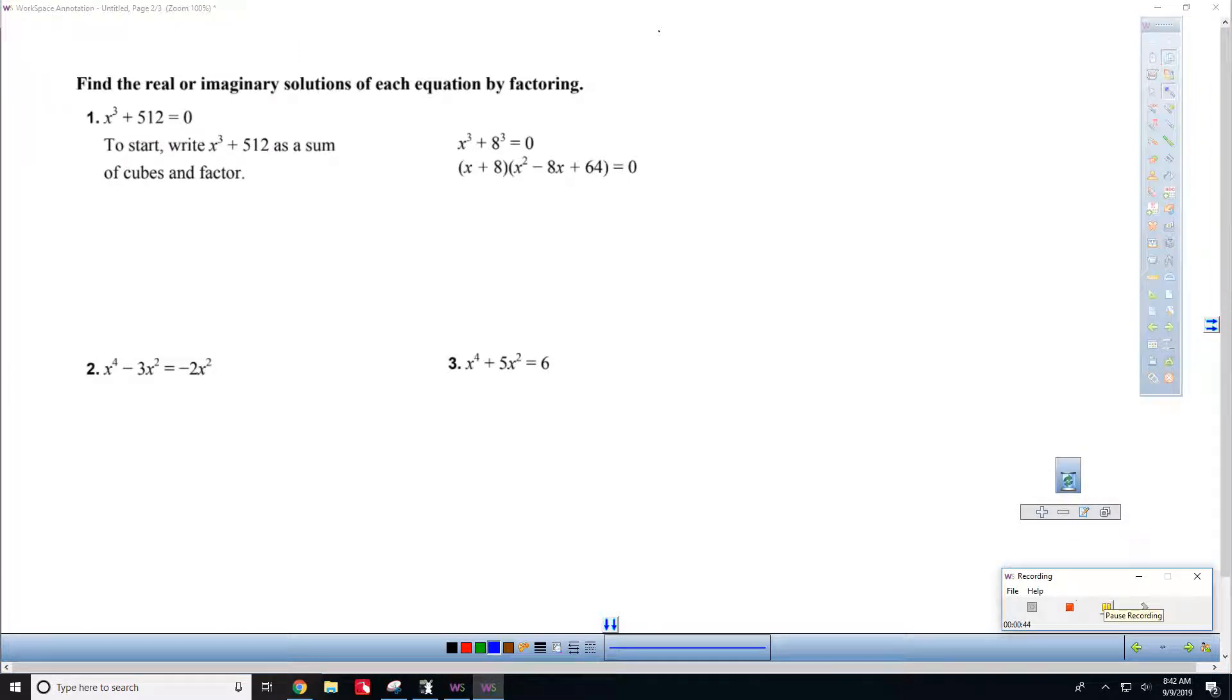Okay, in order to get started on number one, you've got to know this trick of how to factor a sum or a difference of cubes. So this is called a sum of cubes because 512 is equal to 8 cubed. And Mrs. Cahill, big ups, she taught me this SOP: same, opposite, positive. So when you have x cubed plus 8 cubed, you can rewrite that.